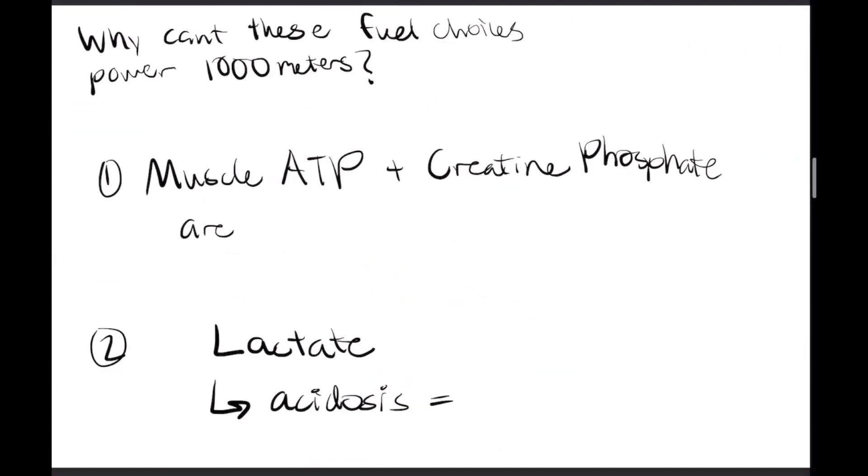Why can't we use these fuel choices when we're running 1,000 meters? When we increase from 100 meters to 1,000 meters. One explanation is because muscle ATP and creatine phosphate are limited. They're limited in the muscle cells. They can only last you for probably about 10 seconds at most, so that won't help with 1,000 meters. The second reason is because by making lactate from glycogen, an increase in lactate concentration, if it gets too high, will lead to acidosis, which is basically too much acid in your blood. And that's no good.